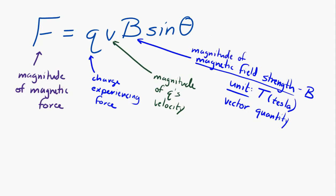And then we have theta. Theta is the angle between the velocity and the magnetic field.